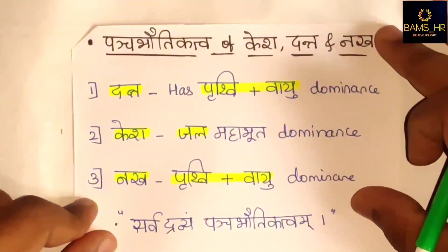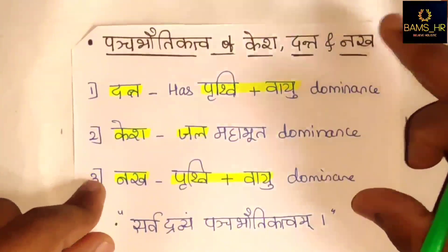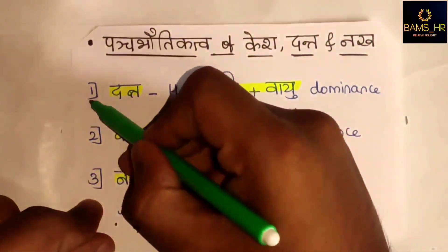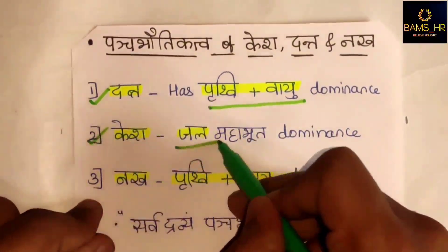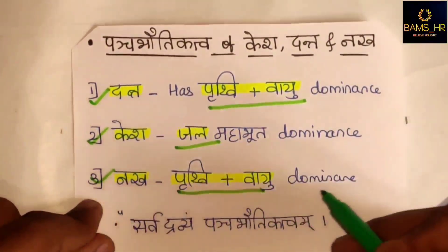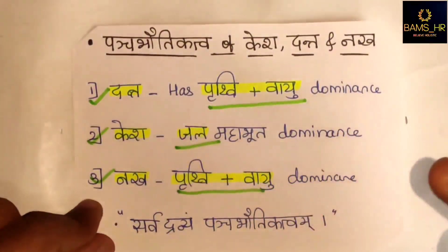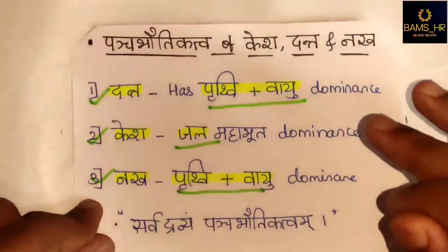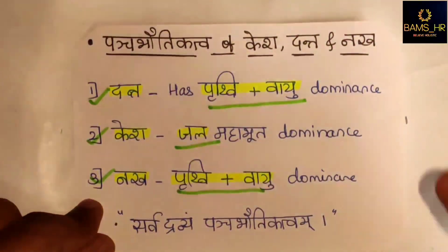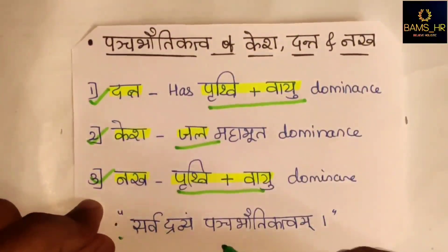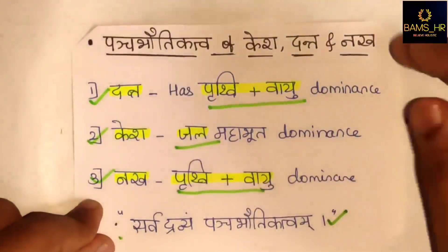Now let's look at the Panchamahabhuta composition of Kesha, Dantha, and Nakha. Dantha has Prithvi and Vayu dominance, Kesha has Jala Mahabhuta dominance, and Nakha has Prithvi and Vayu Mahabhuta dominance. There is an overall sloka: Sarvadhravya Pancha Mahabhuti Katwam - meaning every object in the universe is made up of Panchamahabhuta. Please remember this.